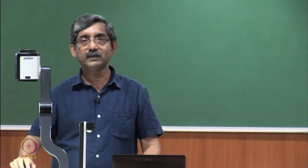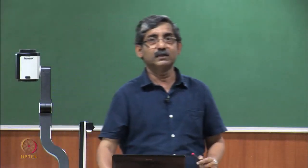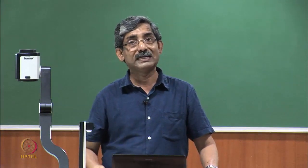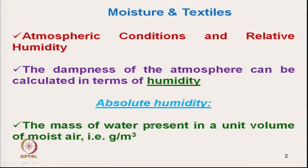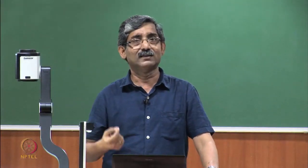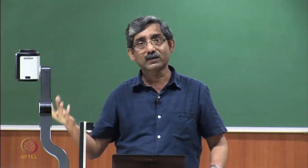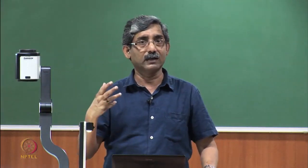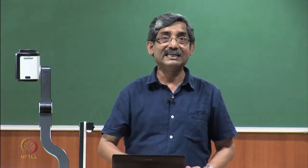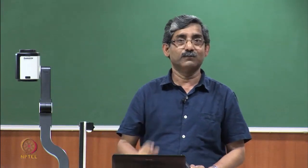This absolute humidity directly shows the amount of mass of water present per unit volume of air. However, it is very difficult in a practical sense to weigh and measure the mass of water in a particular volume. So we have to use an alternate easy way to express the humidity, and that is called relative humidity.